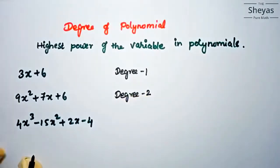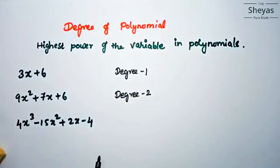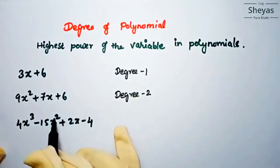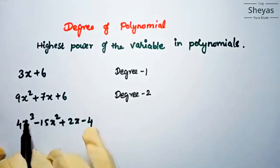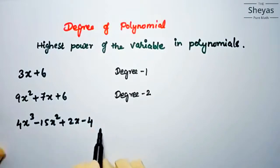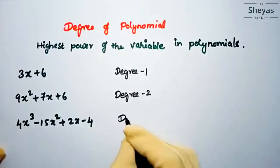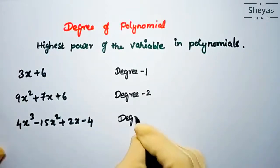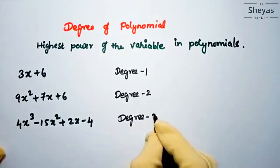In this example, the variable is x and we have powers 1, 2, and 3. Since 3 is the highest power, the degree of this polynomial is 3.